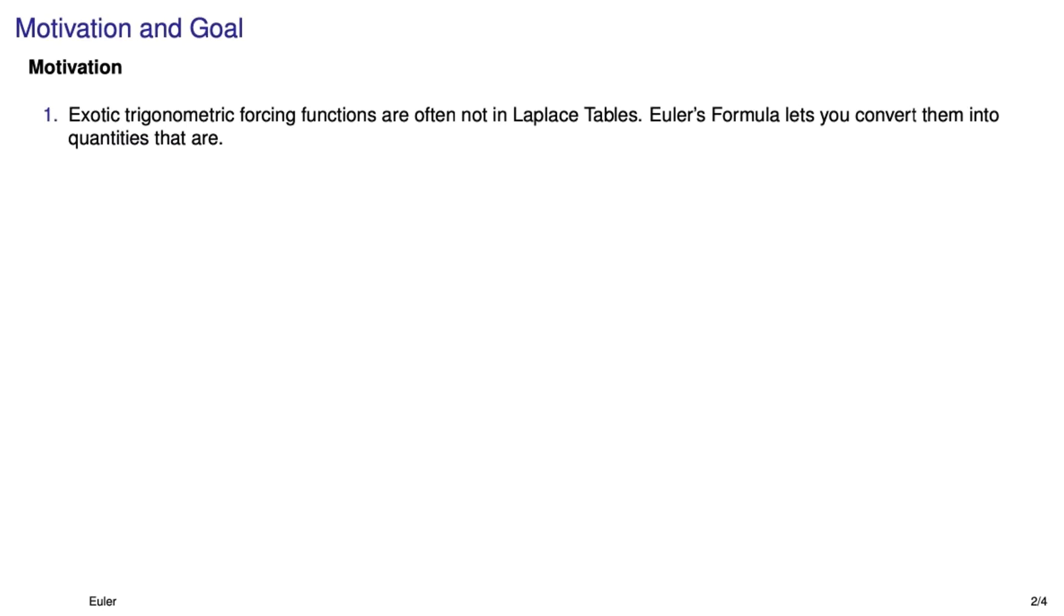The motivation and goal for this is really quite basic. Sometimes you might have some exotic trig functions that are used to force a dynamic system and the stinker isn't in a Laplace transform table. Turns out you can use Euler's formula in conjunction with what you have in the transform table to take the Laplace transforms of those stinkers.